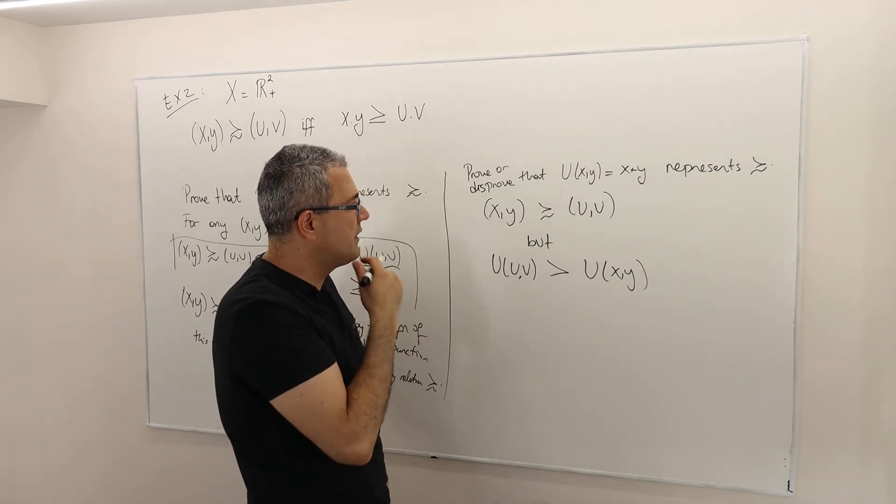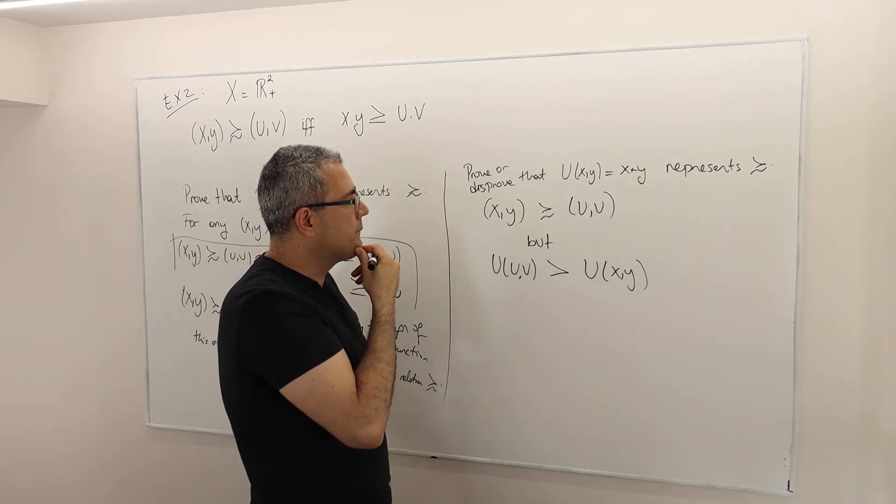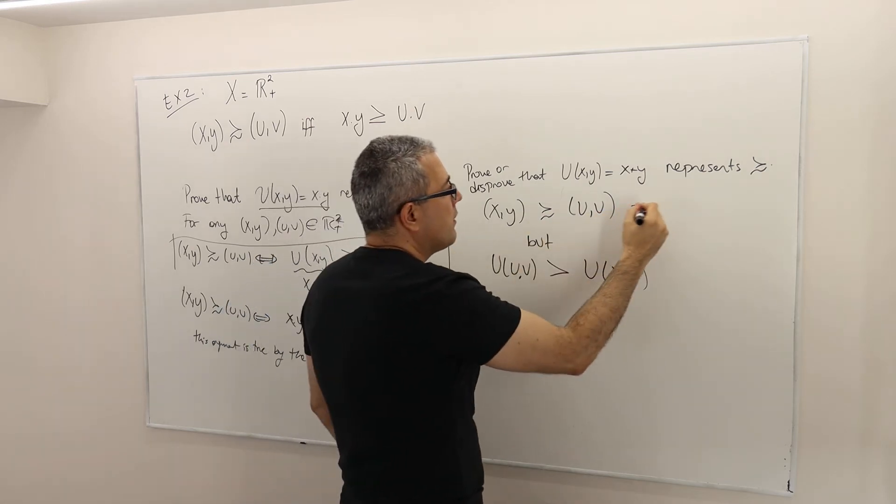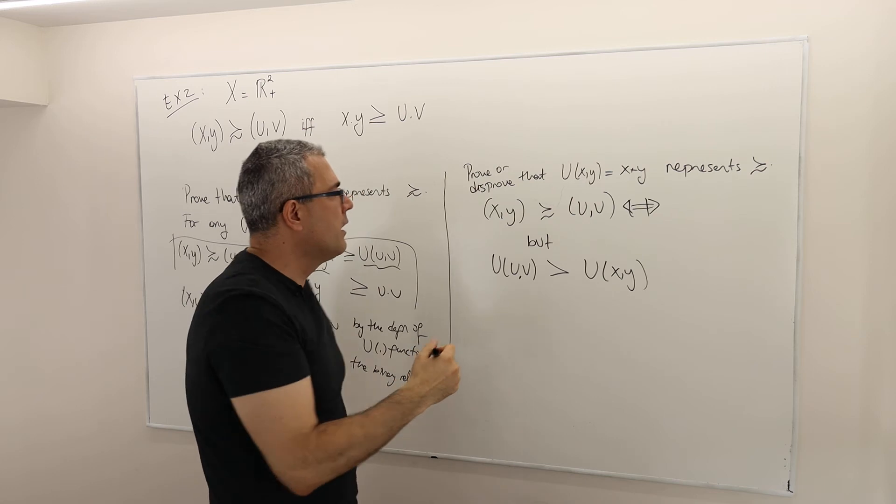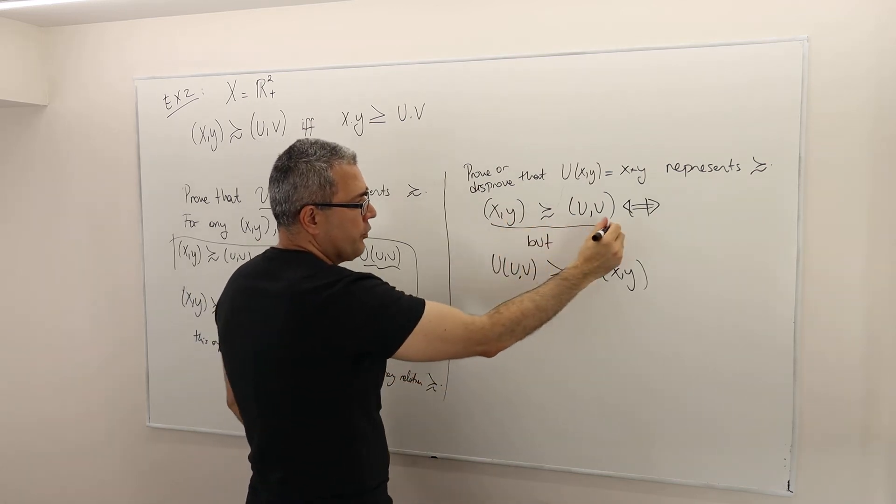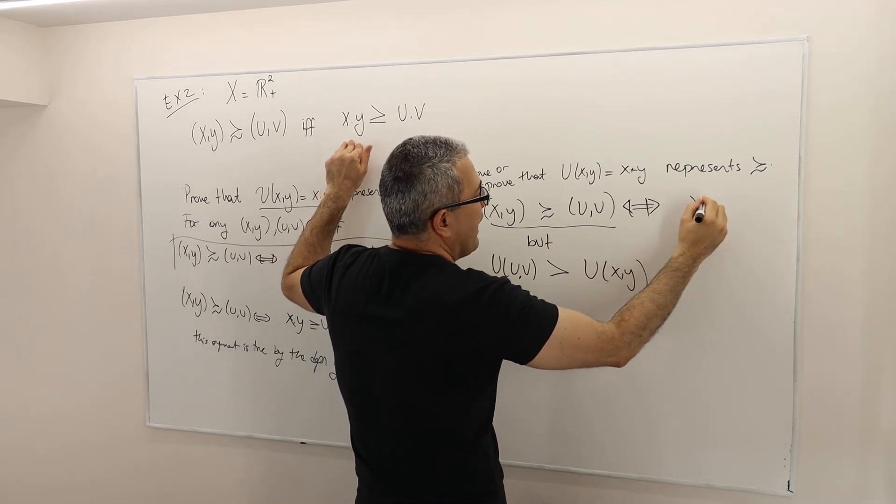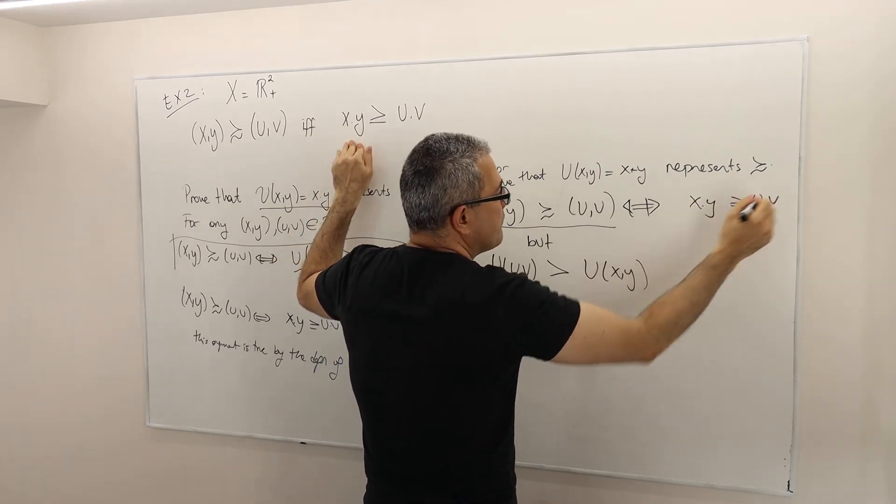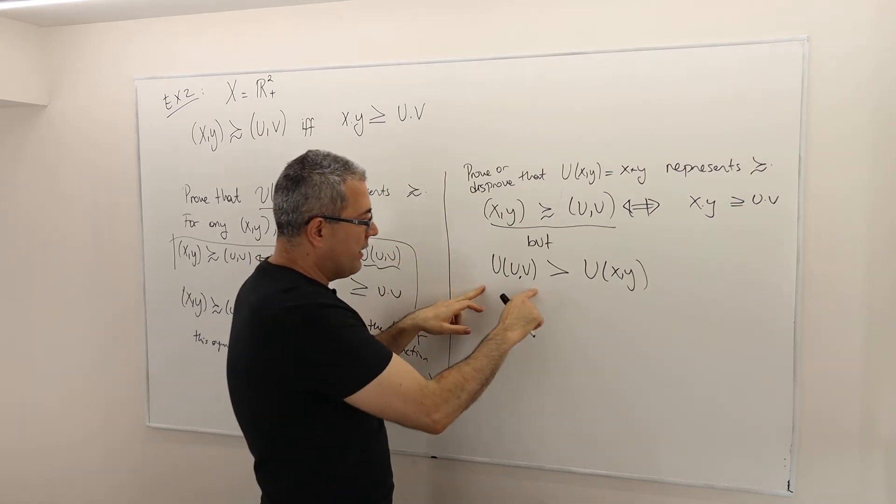I don't have a specific numerical example yet, but let's think. If you find an example, let me know. Always write down what you know. I know that if this is true, it is an if-and-only statement because of the definition, X times Y should be greater than or equal to UV.